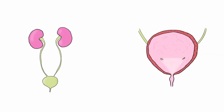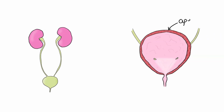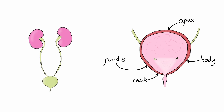The gross anatomy of the bladder can be divided into the apex, which is the superior portion connected to the umbilicus via the median umbilical ligament; the fundus, which is found posteriorly; the body, which is located between the apex and the fundus; and the neck, which elongates in shape to form the urethra.